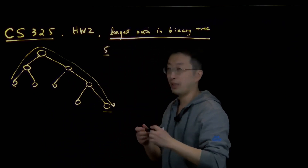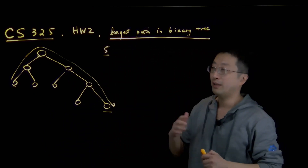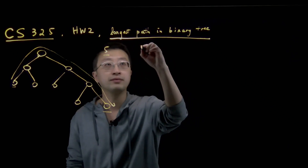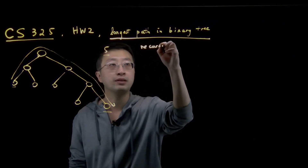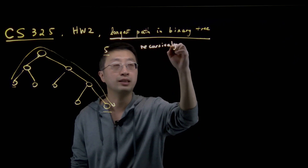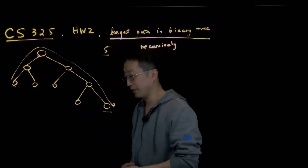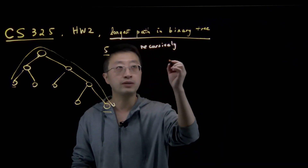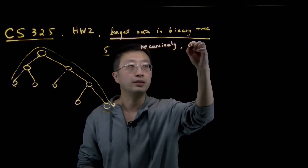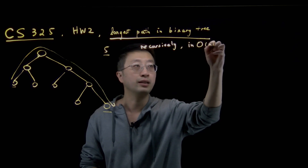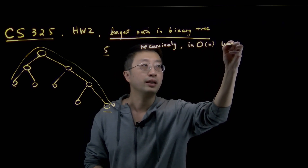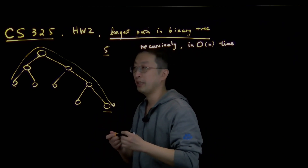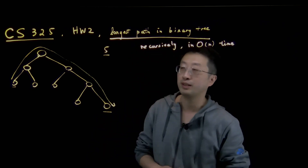How would you solve this problem? The hint is to solve it recursively using divide and conquer, just like we did for most of the problems we've seen so far, like merge sort, quicksort, and number of inversions — recursively, and also in linear time, O(n) time, where n is the number of nodes in the tree. That means you can only visit each node at most once.